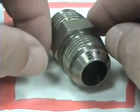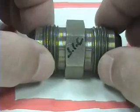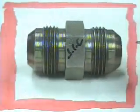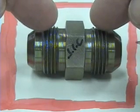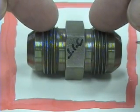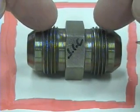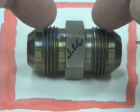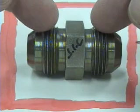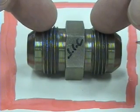JIC is 37 degree angle. This is a union. This fitting is used to connect two swivel hose fittings together, or possibly a tube fitting and a hose fitting, or two rigid tubes together. A union. It joins.